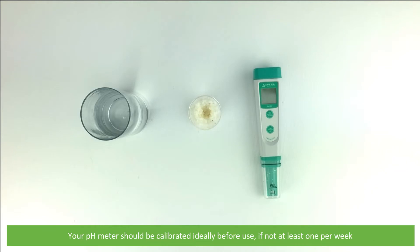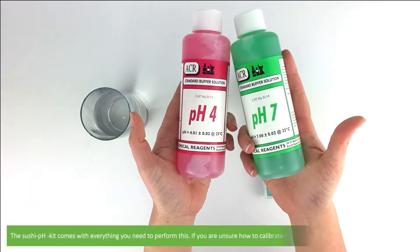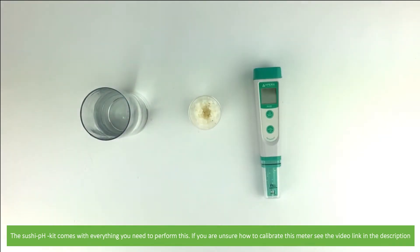Your pH meter should be calibrated ideally before use, if not at least once per week. The sushi pH kit comes with everything you need to perform this. If you're unsure of how to calibrate this meter, see the video link in the description.